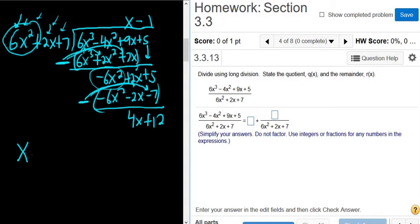The final answer is the quotient (x - 1) plus the remainder (4x + 12) over the divisor: 6x² + 2x + 7.